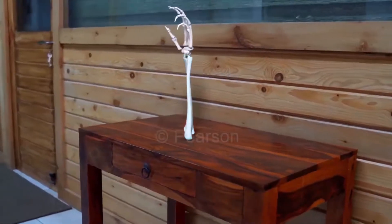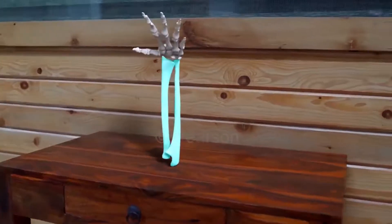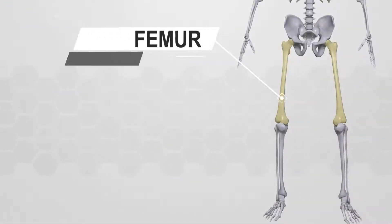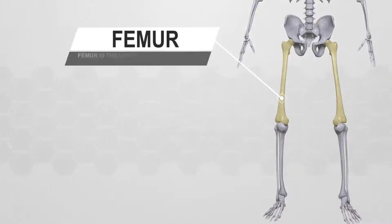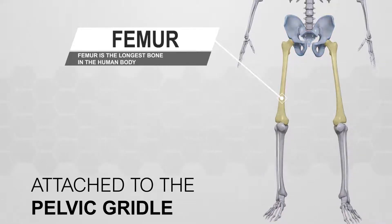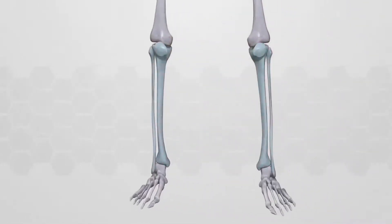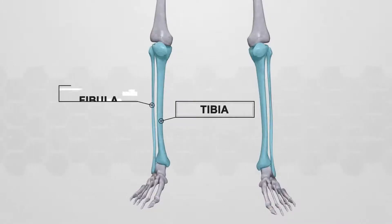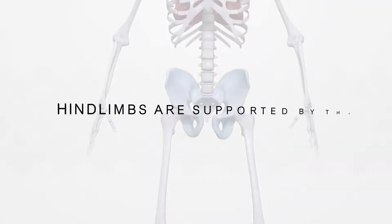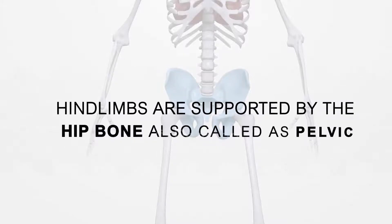Radius and ulna form a part of our forearms. The upper part of our hind limbs is called the femur. Femur is the longest bone in the human body and is attached to the pelvic girdle. The lower part of the human hind limbs comprises of tibia and fibula. Hind limbs are supported by the hip bone, which is also called the pelvis.